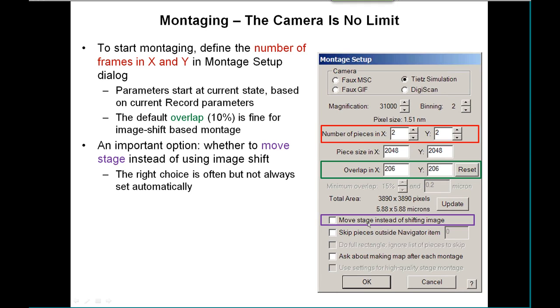So the most important option down here is the one to use whether to move the stage instead of using image shift. Often the program will come in and make the right choice for you because the mag is clearly set for something where moving the stage is appropriate, but not always. So you need to keep an eye on this when you're doing your mapping at the mid-range magnifications.